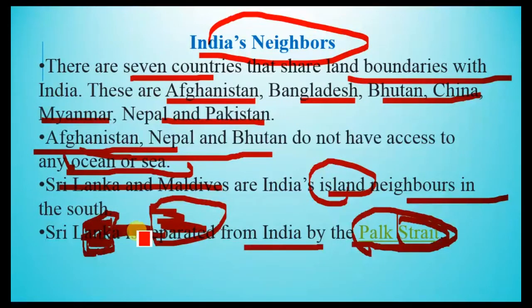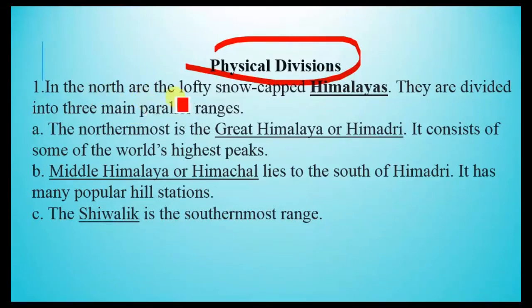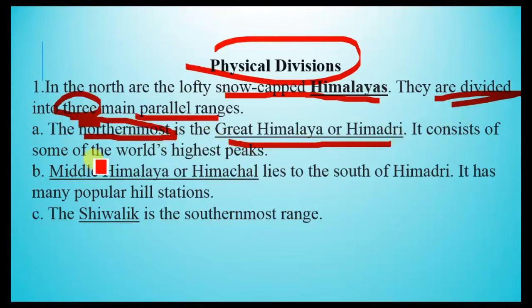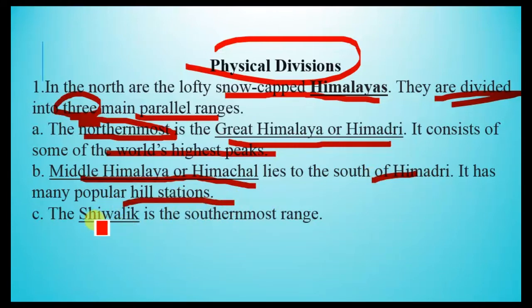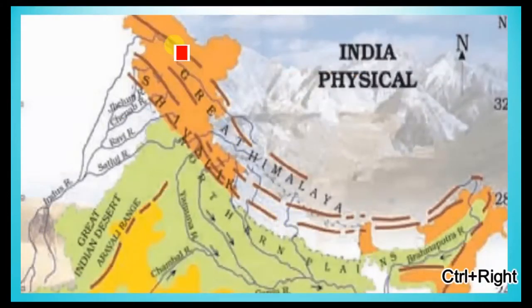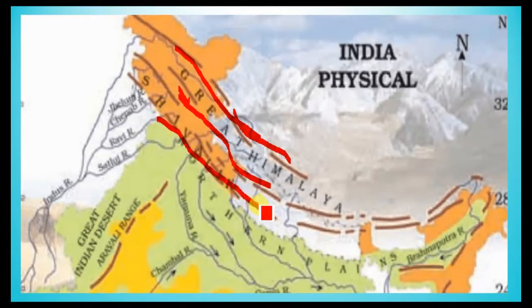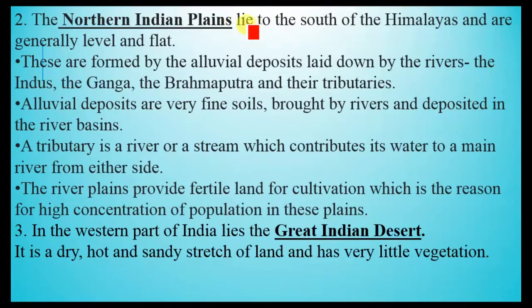Regarding physical divisions, in the north are the lofty snow-capped Himalayas, divided into three main parallel ranges. The northernmost is the Greater Himalaya or Himadri, containing some of the world's highest peaks. The second is the Middle Himalaya or Himachal, which has many popular hill stations. The southernmost is the Shivalik range.